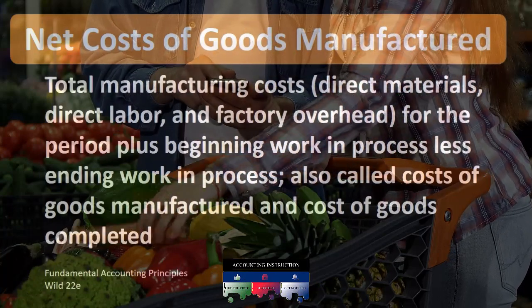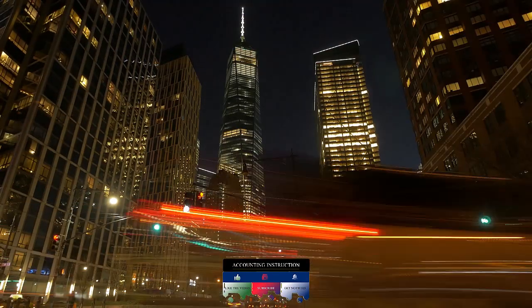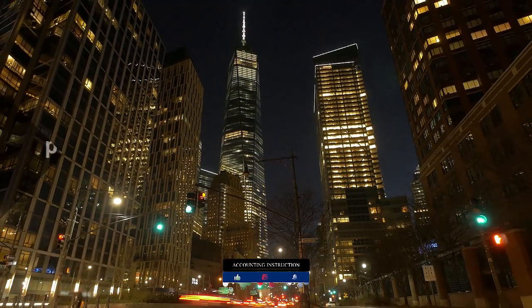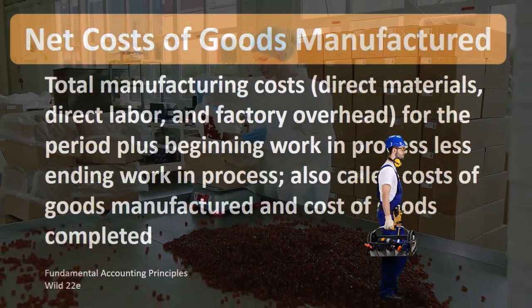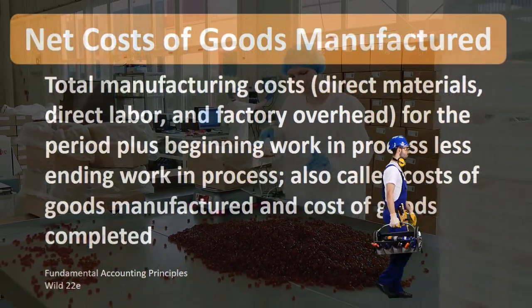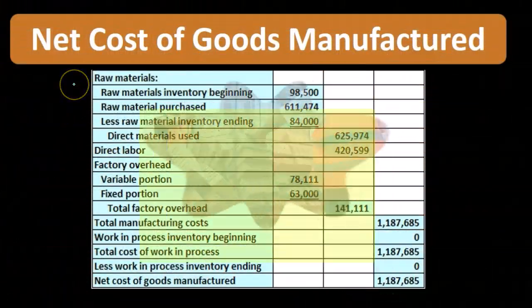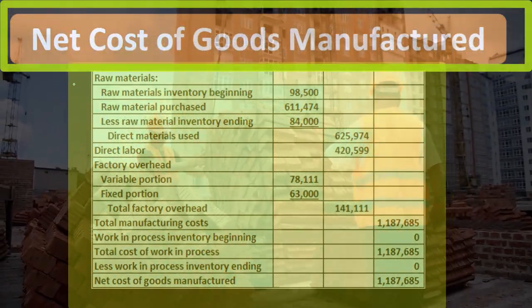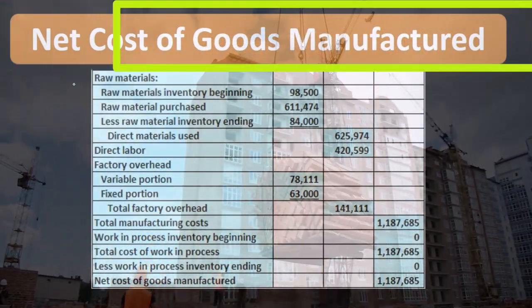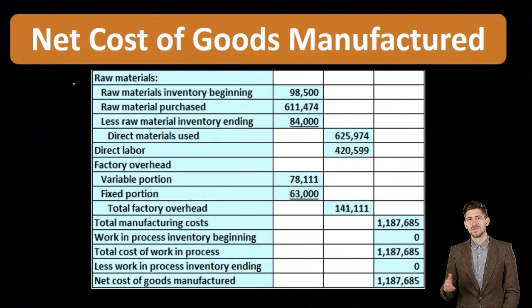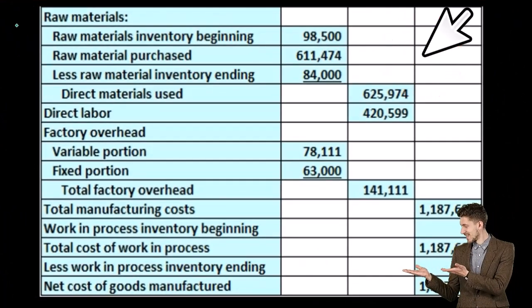When we're thinking about the cost of goods manufactured, we're thinking about a company that manufactures goods — a company that creates inventory from scratch or has a production process to create inventory. When measuring the value of that inventory, we need to include not only the raw materials, but the direct labor and the factory overhead, the conversion costs — the things needed to transpose that raw material to the ending inventory.